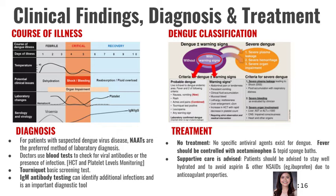The second image shows the signs and symptoms present in dengue. For patients with suspected dengue virus disease, nucleic acid amplification tests are the preferred method of laboratory diagnosis. Together with blood tests, tourniquet test, and IgM antibody testing may be used as well. As for treatment, it is mainly symptomatic with acetaminophen as the drug of choice for fever, and supportive care is advised.